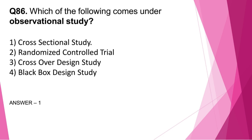Question number 86: Which of the following comes under Observational Study? Cross-Sectional Study, RCT, Crossover Design Study, Black Box Design Study. The correct answer is option 1, Cross-Sectional Study. The other three options come under Experimental Study. Examples of Observational Studies are Cross-Sectional Study, Cohort, Case Control, Longitudinal Study, Case Report, etc.